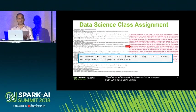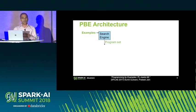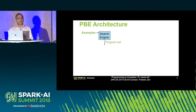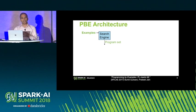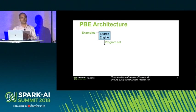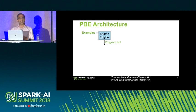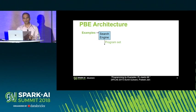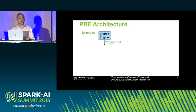Now let's look at how the underlying technology works. At the heart of these programming-by-example technologies is a program search engine that takes input examples from the user and generates a bunch of programs consistent with those examples. We could potentially search over existing repositories, but it is unlikely that the exact task a user is trying to do has been done before, so we construct these programs from scratch.